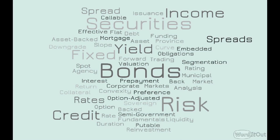On the flip side, fixed income is going to be bonds — and the big words here are bonds, securities, yield, risk, and credit. Some other notable words include options-adjusted, convexity, preference analysis, segmentation, forward trading, funds, and mortgages. This covers both traditional fixed income like bonds and corporate bonds, and also things like swaps, forwards, and asset-backed securities that are fixed income but have derivative products, making it more difficult. The section also looks at interest rate spreads, yield curves, and how they fluctuate, flatten, increase, and decrease over time.